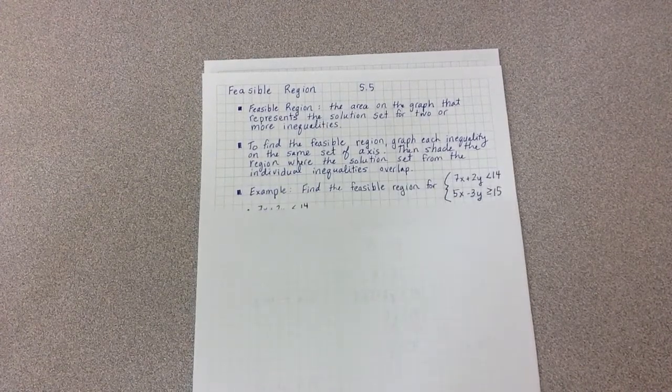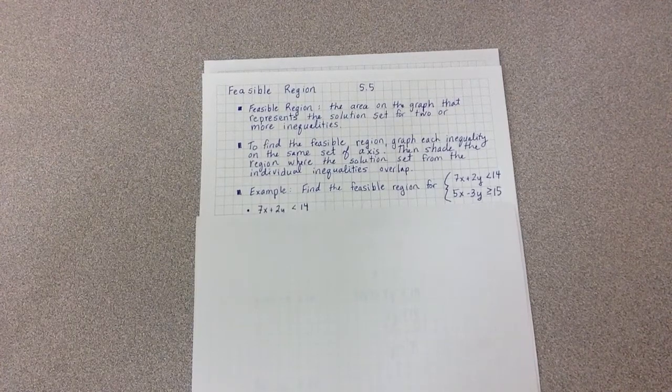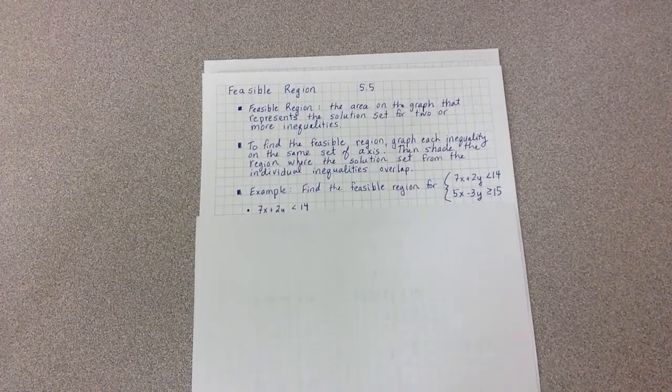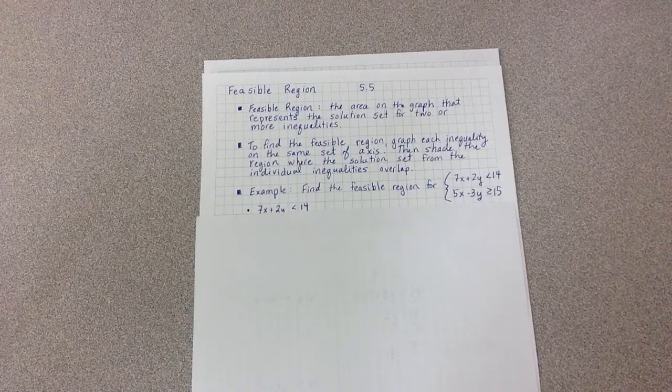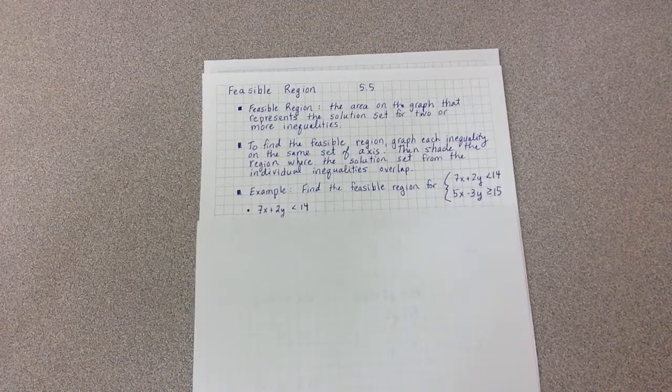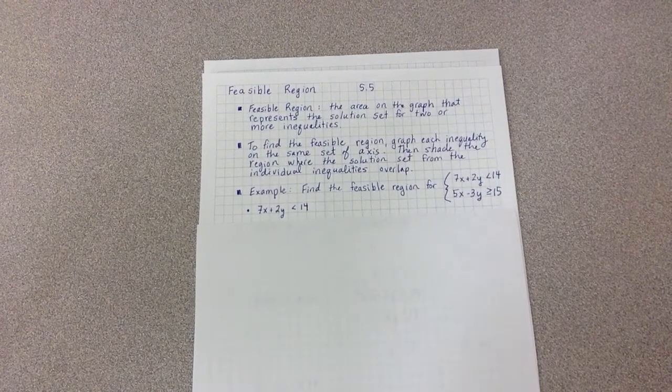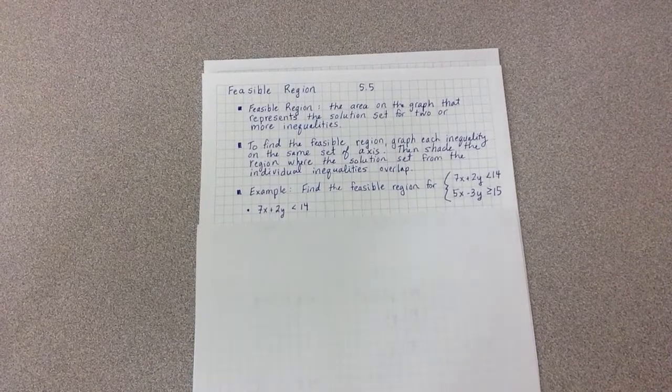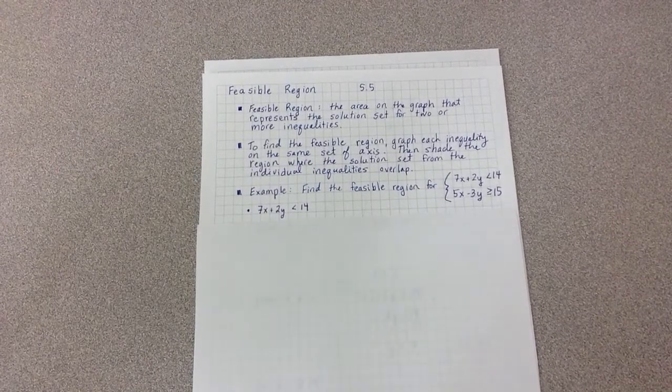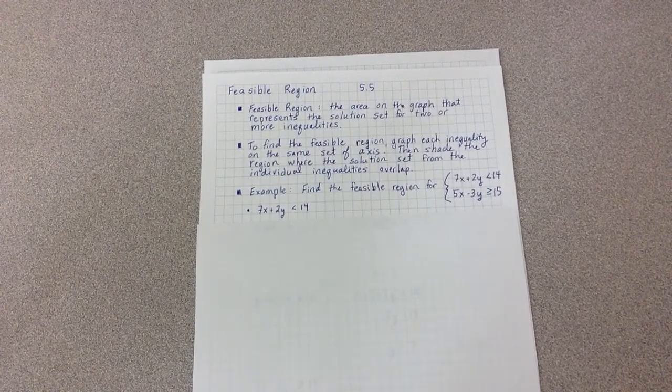Our example will be find the feasible region for 7x plus 2y is less than 14, and 5x minus 3y is greater than or equal to 15. I'm going to start with the first equation, 7x plus 2y is less than 14. The first thing I notice is that both of them are in standard form.